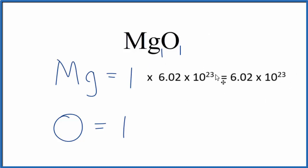Likewise, for oxygen, we'd multiply that by the same thing. This is Dr. B with the number of atoms in MgO. Thanks for watching.